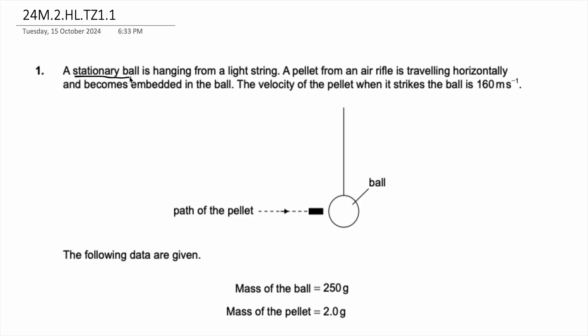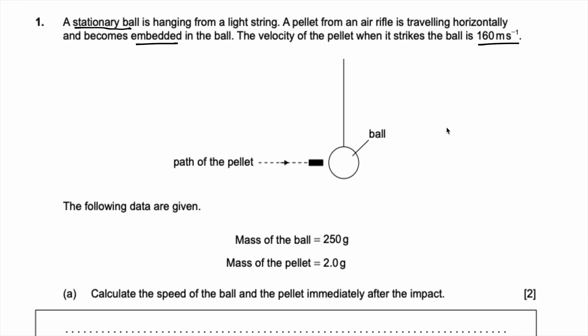A stationary ball is hanging from a light string. A pellet from an air rifle is traveling horizontally and becomes embedded in the ball. The velocity of the pellet when it strikes the ball is 160 meters per second. They've given us a diagram and the following data. The mass of the ball is 250 grams and the mass of the pellet is 2 grams.